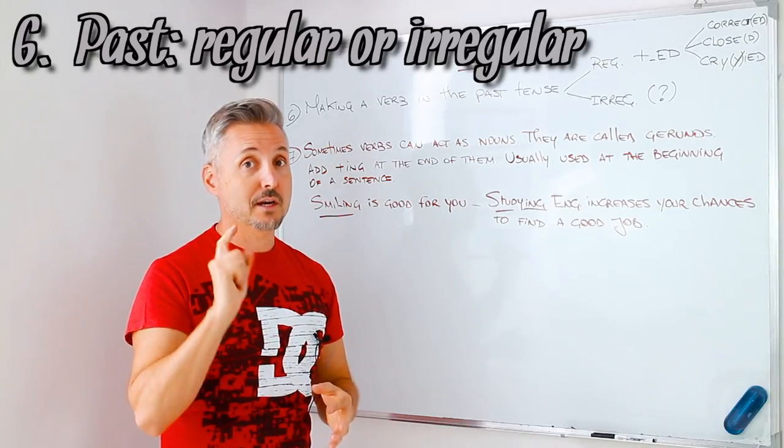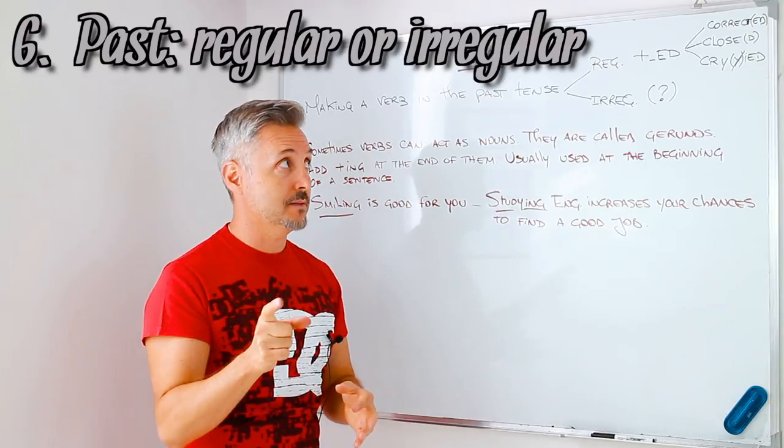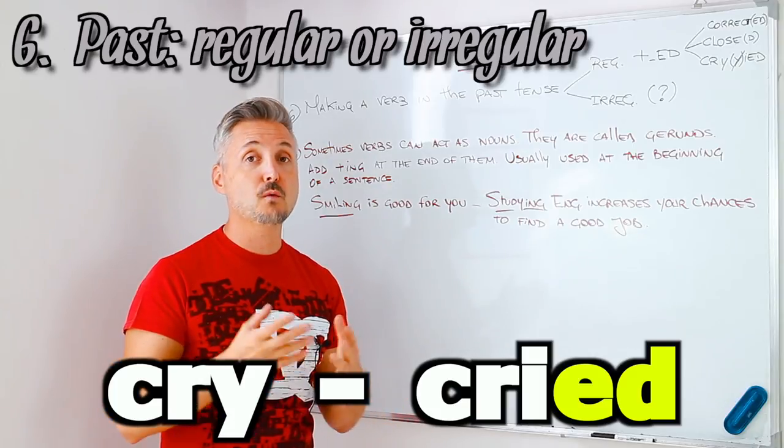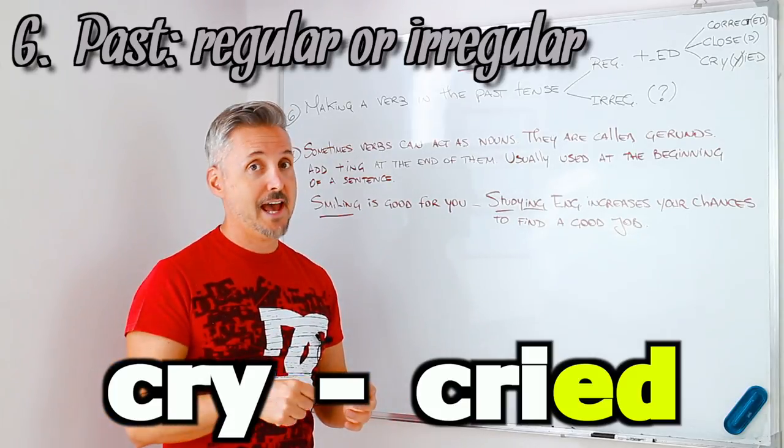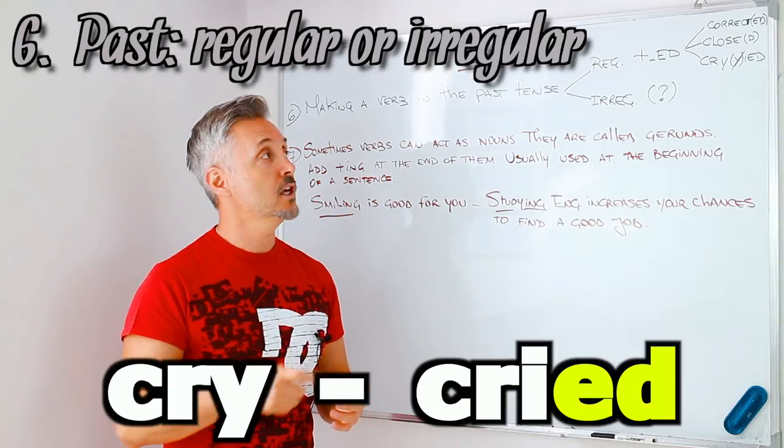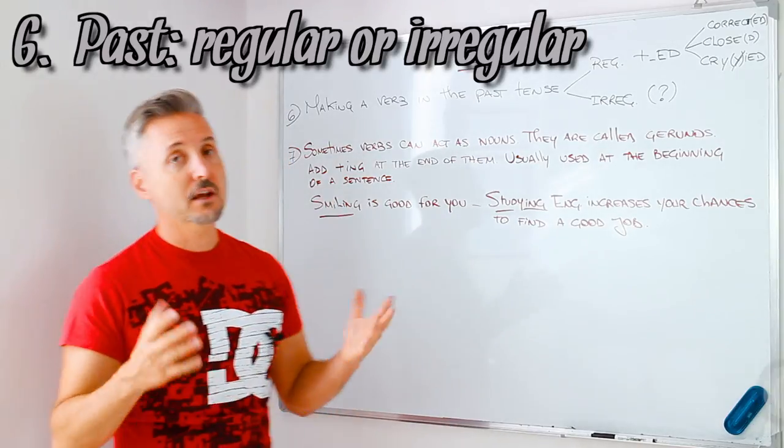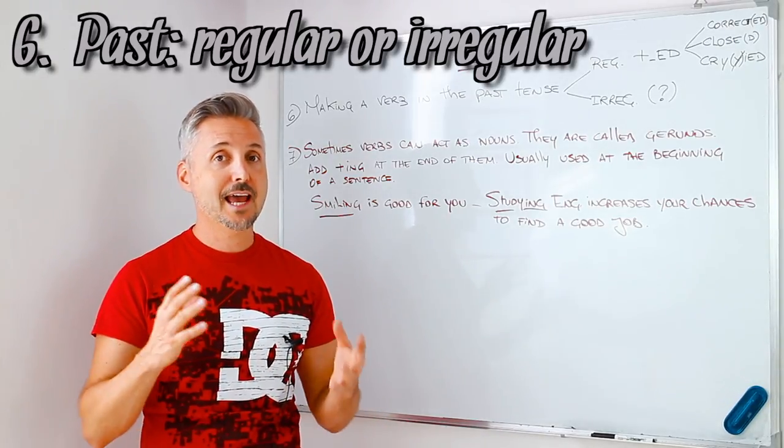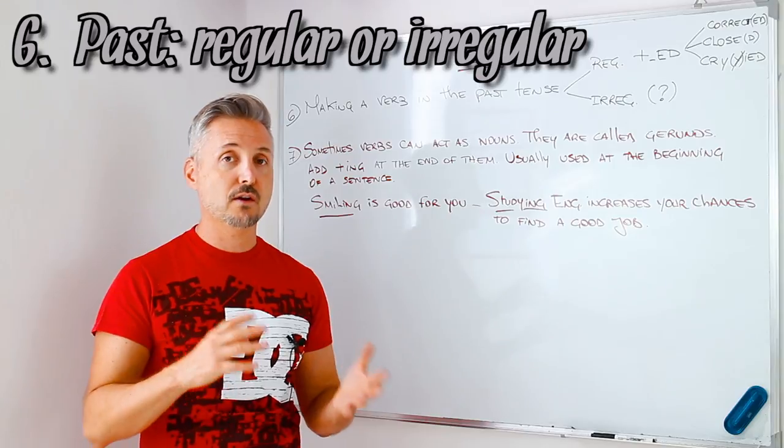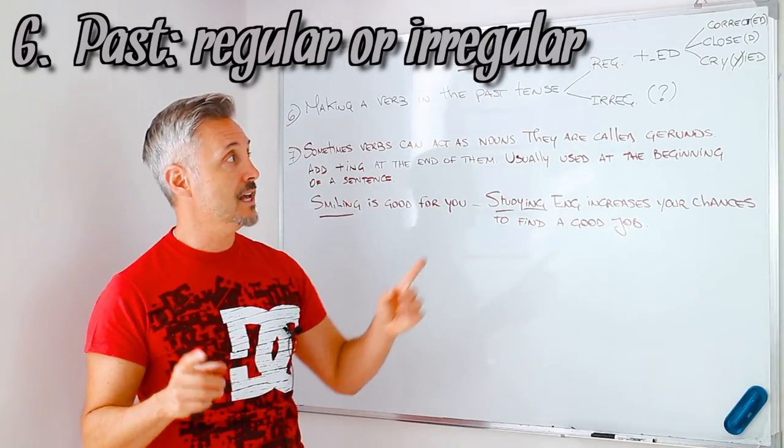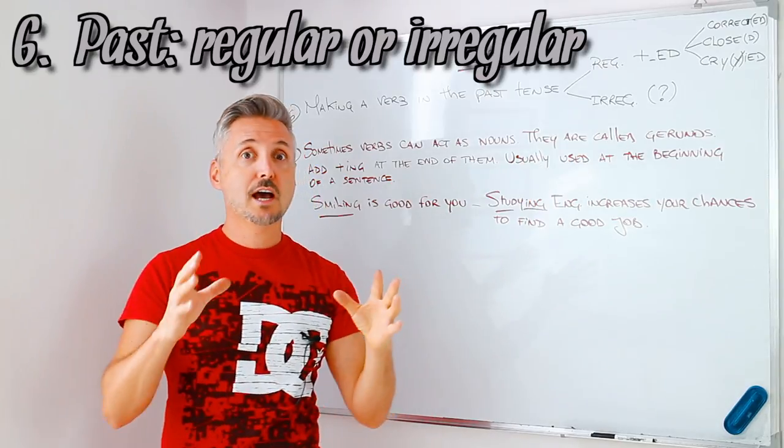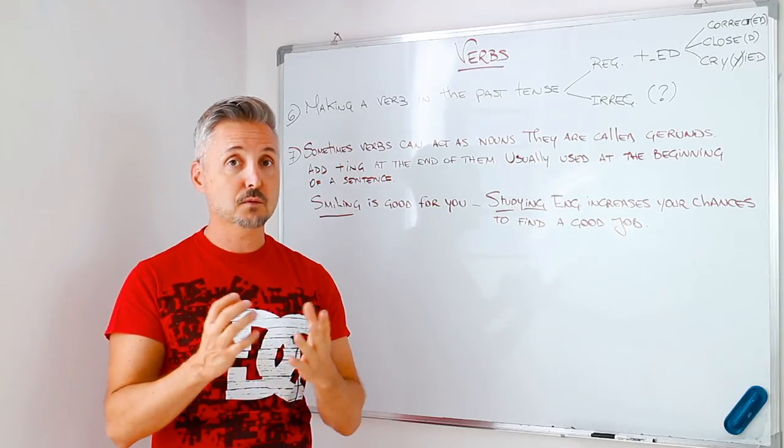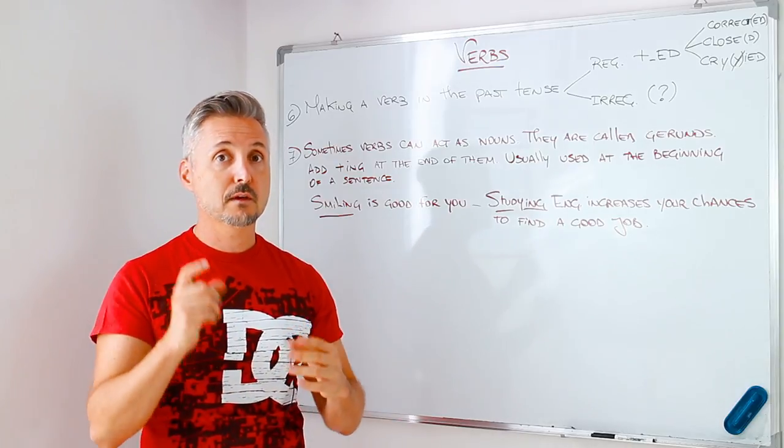And remember also the pronunciation. Closed. Now, we have cry. What about cry? It ends with Y. We take out the Y and we add IED. So, cried. Then, the irregular ones, you have to remember them. Like I said, there is a good lesson on regular and irregular verbs. And in this case, in my lesson, I will teach you how to learn the irregular verbs by groups. This will help you remember them in a better way.